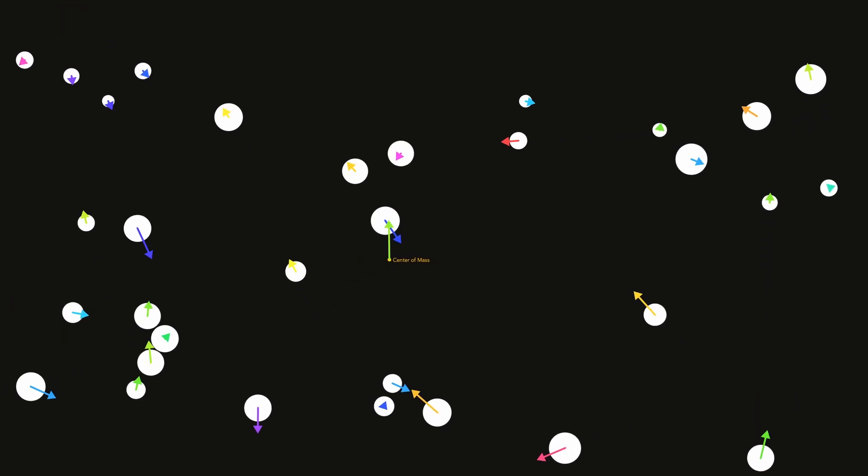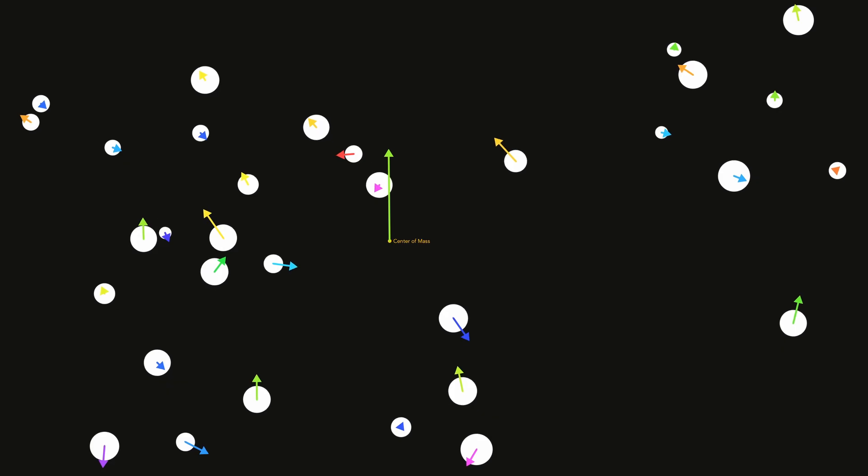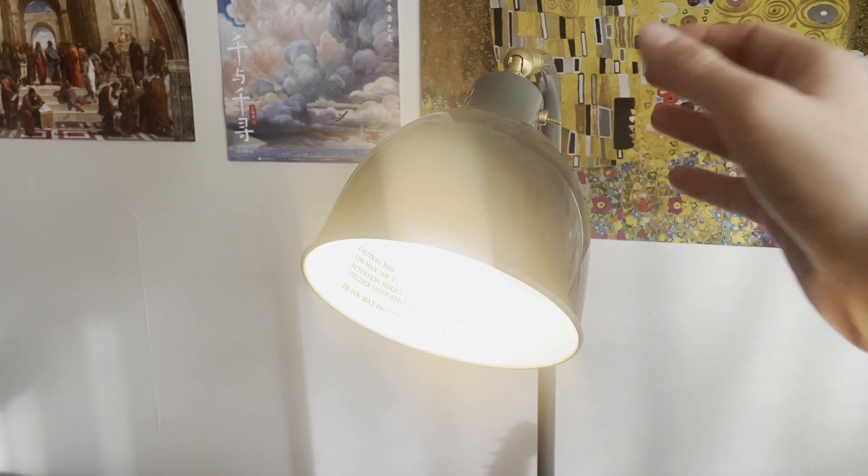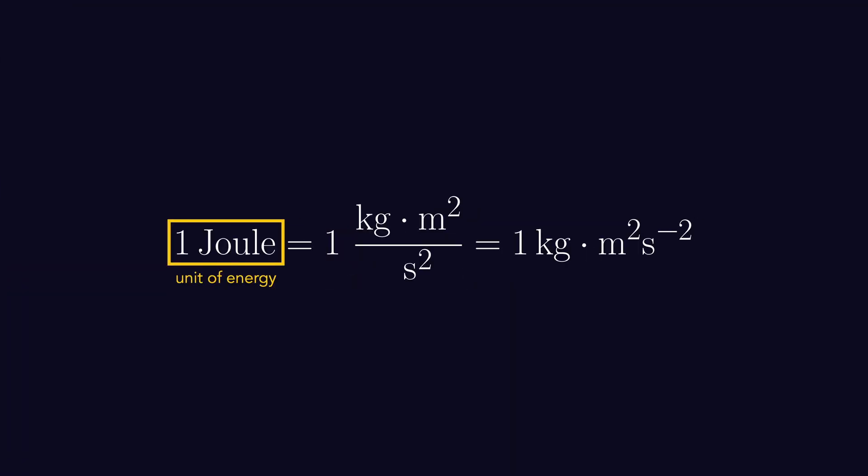Unlike momentum, energy isn't just about movement. It measures anything that can perform useful work. It takes energy to lift an object, to make a noise, to power a light bulb. Thus, the unit of energy, the joule, is scalar. It has magnitude, but not direction.